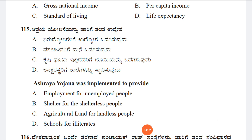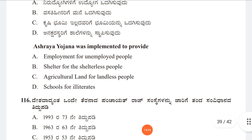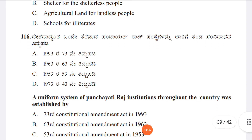Question 115: Ashraya Yojana was implemented to provide what? Option A: Employment for unemployed people, Option B: Shelter for the shelterless people, Option C: Agricultural land for landless people, Option D: Schools for illiterates. Option B is correct — Shelter for the shelterless people.